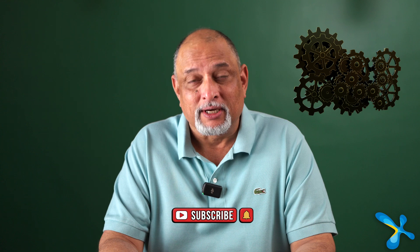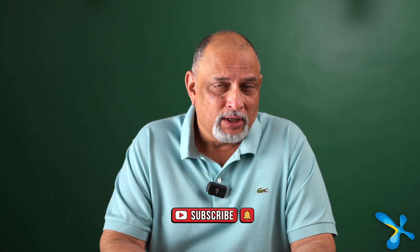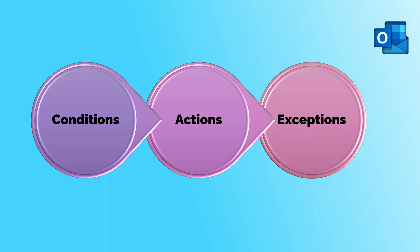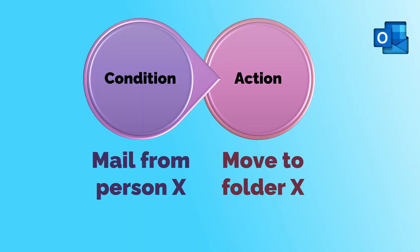What are rules? It's a simple kind of automation available within Outlook. We have three things as a part of rules: there is a condition, there is an action, and there can be exceptions. In simple terms, when this happens, do that. The commonest rule which we create is getting a mail from someone and putting it in a folder with the name of that person — a simple kind of automation using rules.